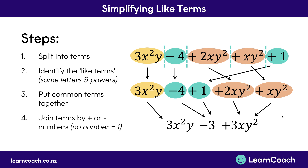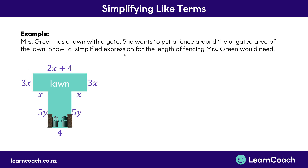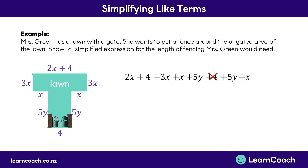There's one final challenge that can come up in exams — word problems, which can be hard to understand. In this example, Mrs. Green has a lawn with a gate at the bottom and wants to put a fence around the ungated area. Our job is to write a simplified expression for the length of fencing needed. The sides are labelled: 2x plus 4 along the top, 3x down the side, then x, 5y, and 4 along the bottom. Since she doesn't need a fence along the gated bottom, we cross that out and add: 2x plus 4, plus 3x, plus x, plus 5y, plus 3x.